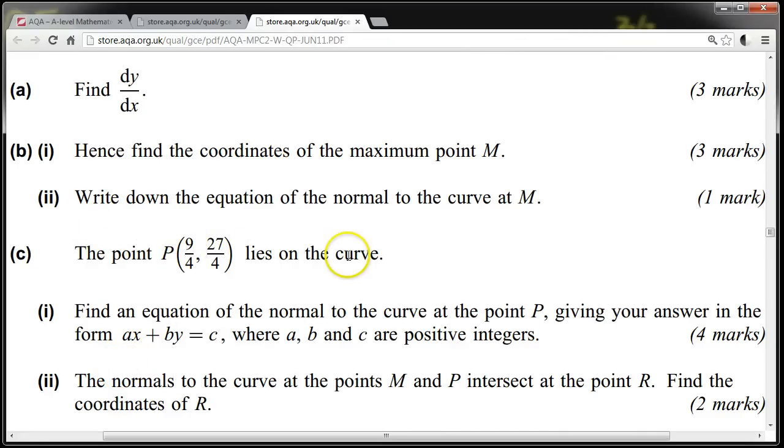The point P lies on the curve. Find the equation of the normal to the curve at the point P, giving your answer in the form Ax plus By equals C, where A, B, and C are positive integers.